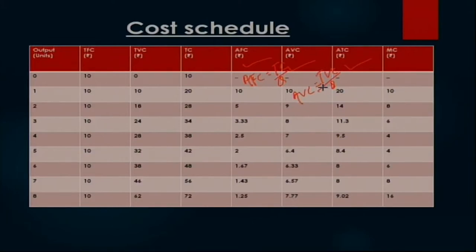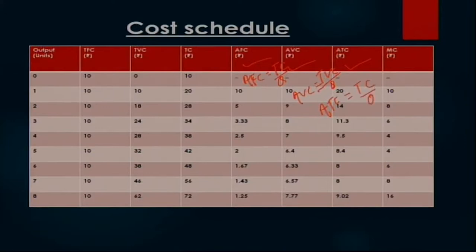इस तरह से जब TFC को और TVC को quantity of commodity — produced commodity के quantity से divide कर दोगे, तो आपको per unit fixed cost, per unit variable cost, and per unit total cost मिलेगा। It means that ATC = TC upon Q.